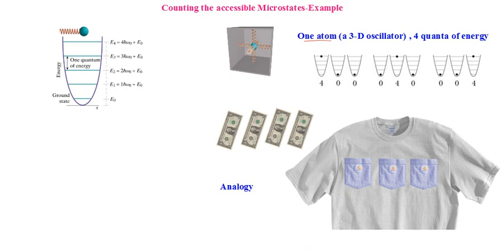In real systems, even the most advanced supercomputers will find it difficult to get the count within a reasonable span of time. That is the reason we use toy models — only to understand the concept of microstates. Here we consider a single atom in a crystal. Every atom in a lattice behaves like an oscillator, called an atomic oscillator. A single particle isolated in a crystal can be considered as a harmonic oscillator.